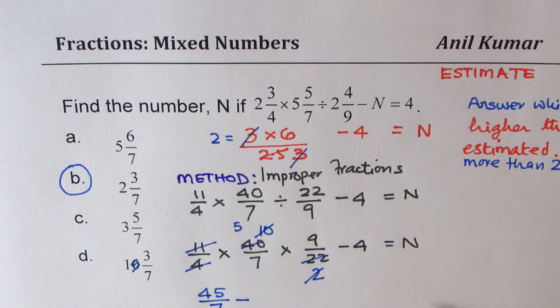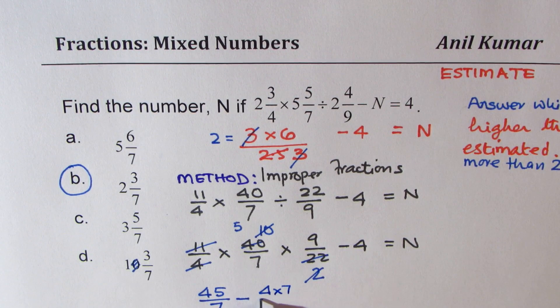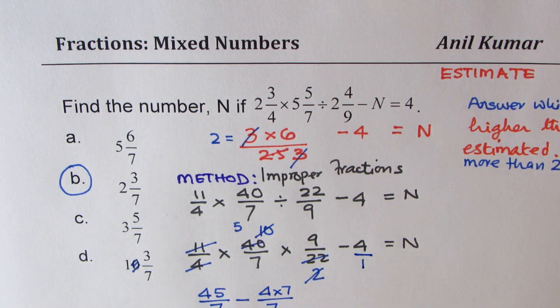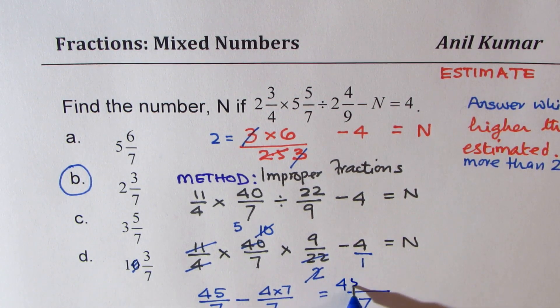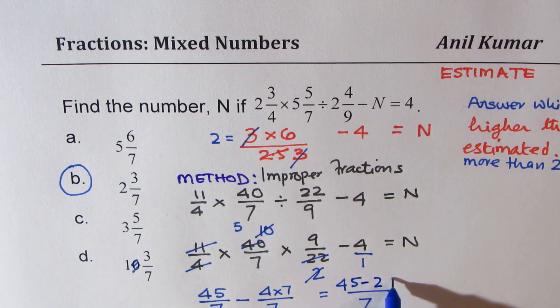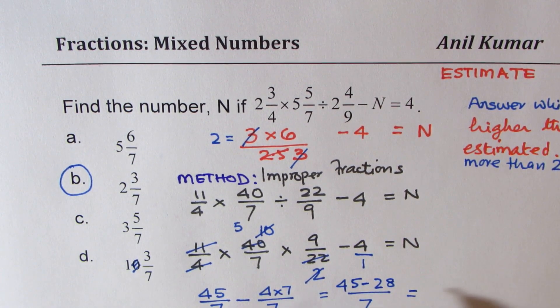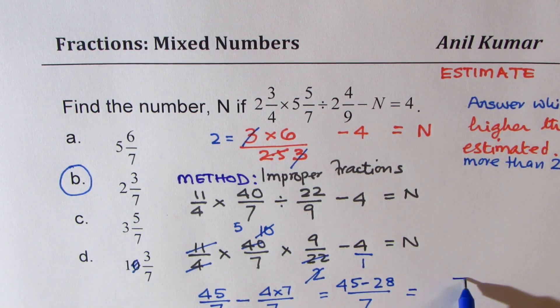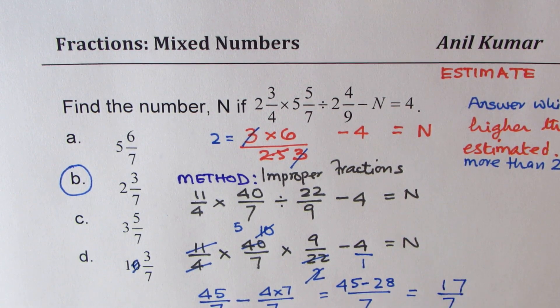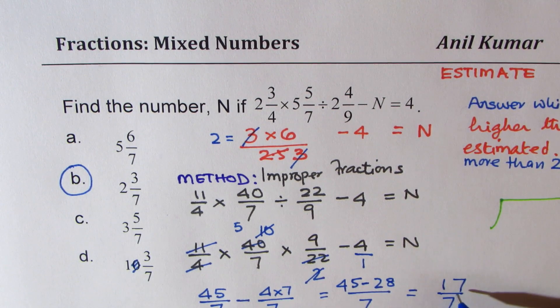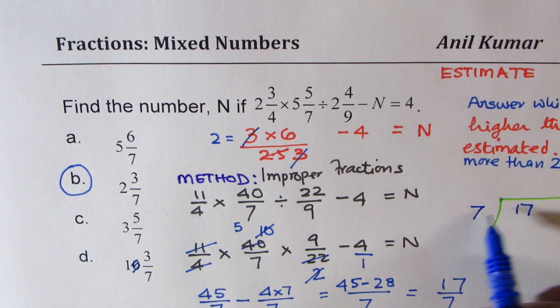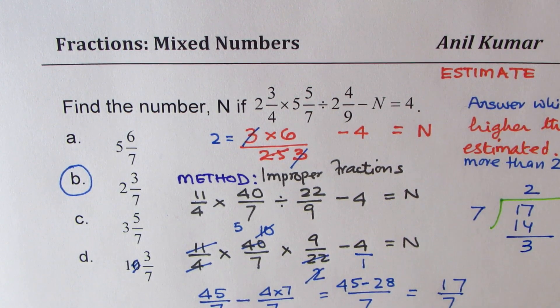So, what you get here is 9 times 5 which is 45 divided by 7 minus 4. Since 7 is the denominator here, we should write here 4 times 7 over 7. We are making it same denominator. So, basically now, what you have is 7 as the common denominator. You have to take away 28 from 45. And then, when you take away, you get 17 over 7 and now you have to divide.